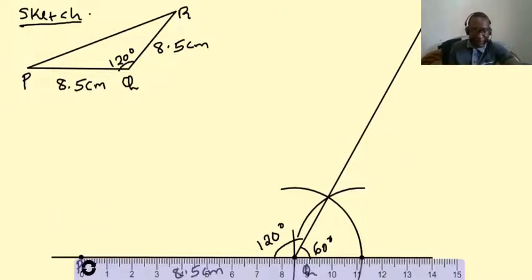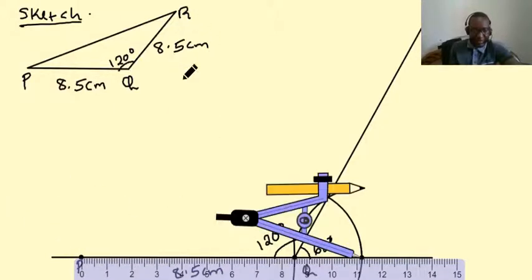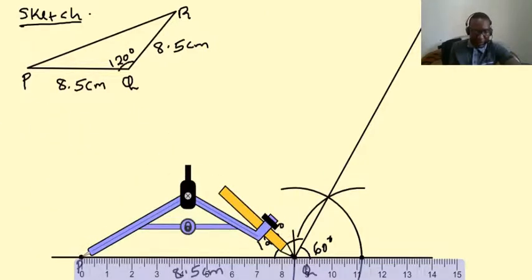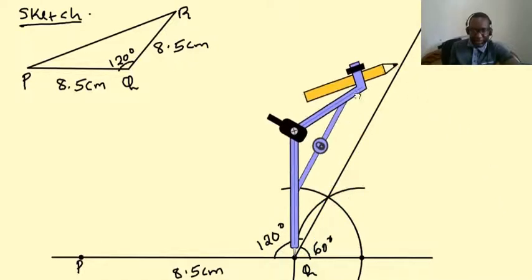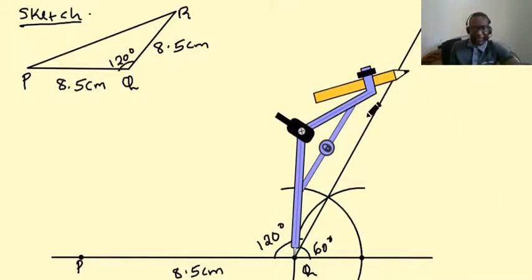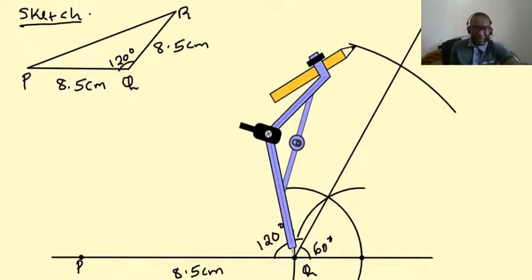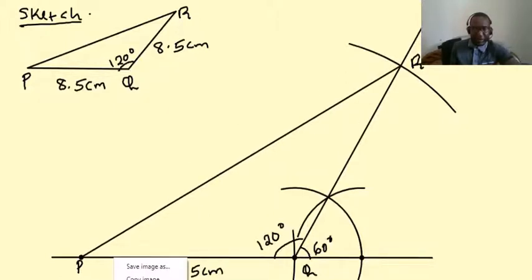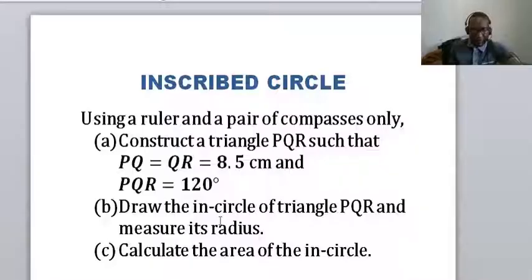Then we get our ruler to measure off 8.5 which helps us to identify where point R is. Now we need to make an arc along this line that will help us to identify where point R is. So point R is where this arc intersects with the line there. So next we get our ruler, we join P to R. So that's our triangle PQR.